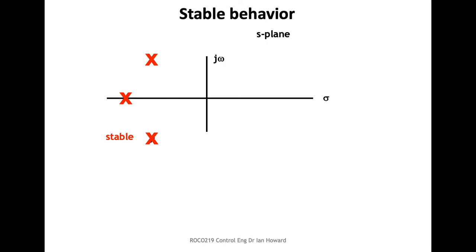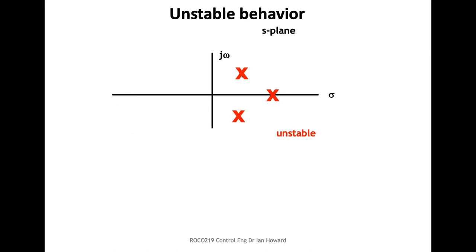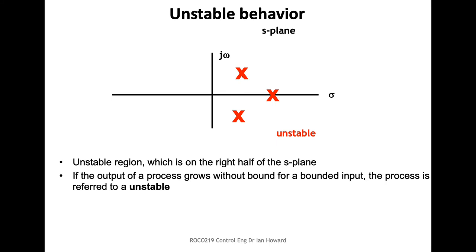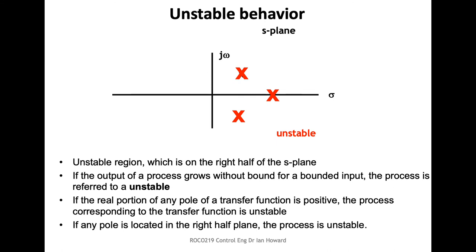We can think about what is stable and unstable by looking at this S-plane. Stable means negative real parts — we want poles on the left-hand side of the S-plane. On the right-hand side, we have positive real parts, and in this case we get an exponential increase in value. So the right half of the S-plane is where everything is considered unstable, and we generally want to avoid that.